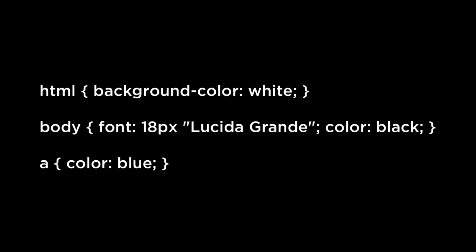What CSS looks like. CSS can look like this. As you can see, the lines of CSS can define the color, font size, font style, link color, etc. for each specific structural HTML element. In this case, the HTML background will be white. The body of the HTML document will use a font that is 18 pixels tall, uses the font type Lucida Grande, and is colored black. And all the links will have a color blue.